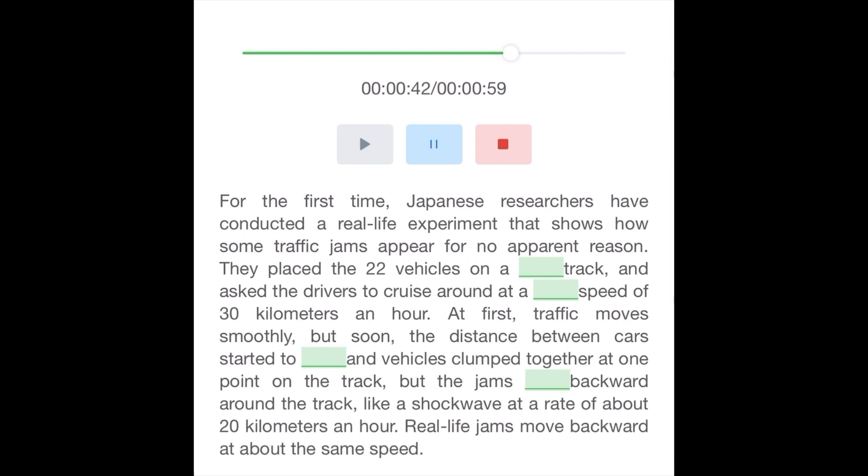The distance between cars started to vary and vehicles clumped together at one point on the track. But the jams spread backward around the track like a shockwave at a rate of about 20 kilometers an hour. Real-life jams moved backward at about the same speed.